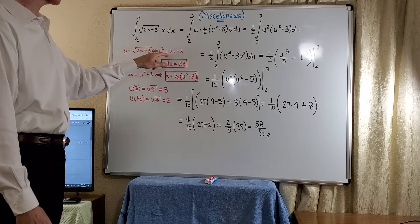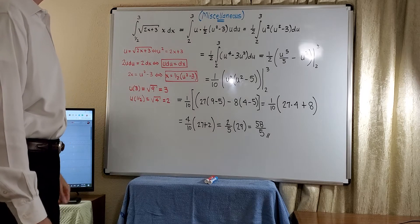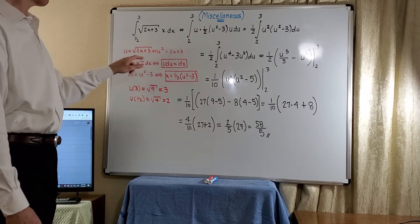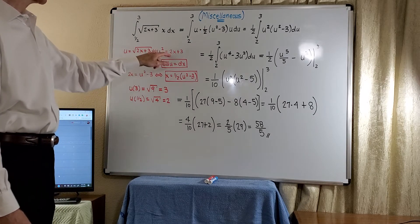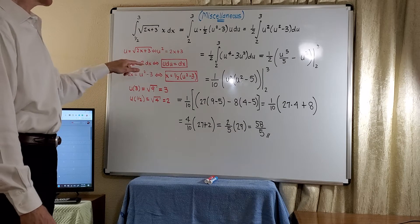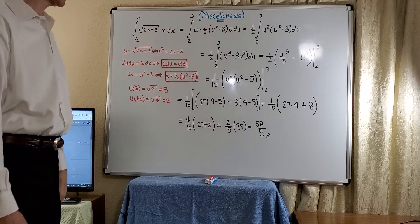Upon squaring, we get u squared is equal to 2x plus 3. And then we can take the differential, 2u du is equal to 2dx. The 2s absorb and we get u du is equal to dx.